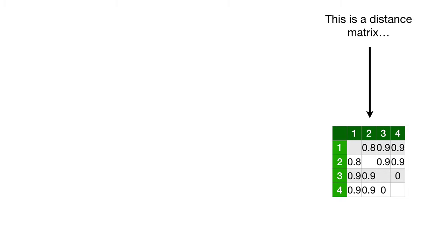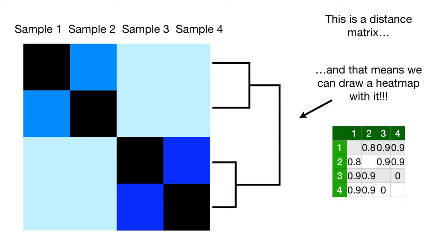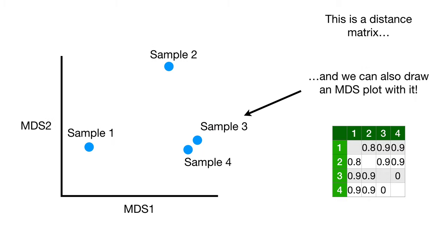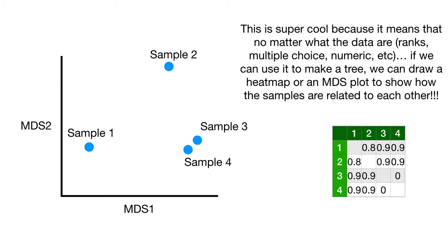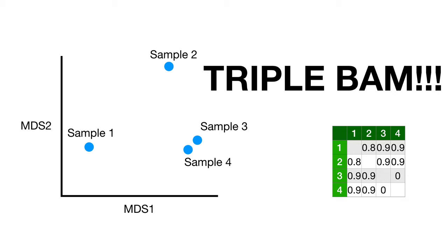Close as can be equals no distance between and not close equals far away. This is a distance matrix and that means we can draw heat map with it. If you don't know what a heat map is, check out the StatQuest. And we can also draw an MDS plot with it. And if you don't know what an MDS plot is, well, check out the StatQuest. I think this is super cool because it means that no matter what the data are, ranks, multiple choice, numeric, etc., If we can use it to make a tree, we can draw a heat map or an MDS plot to show how the samples are related to each other. This is awesome. Triple BAM.